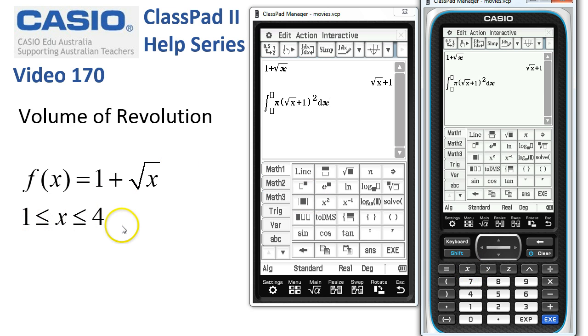And we want the limits to be between 1 and 4. So we'll tap 1 at the bottom, 4 for our upper limit. We're in standard real degrees. That should all be fine. We'll tap execute.